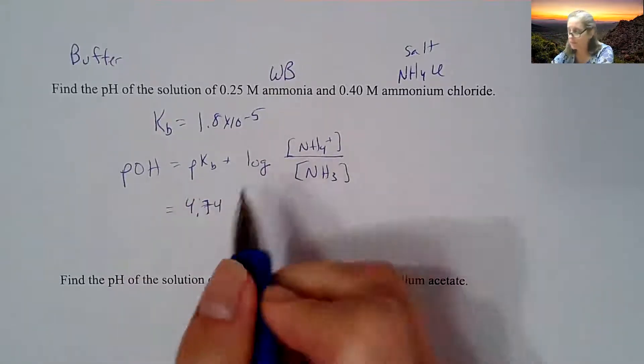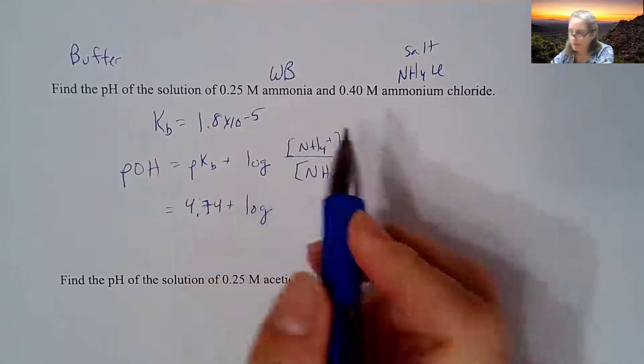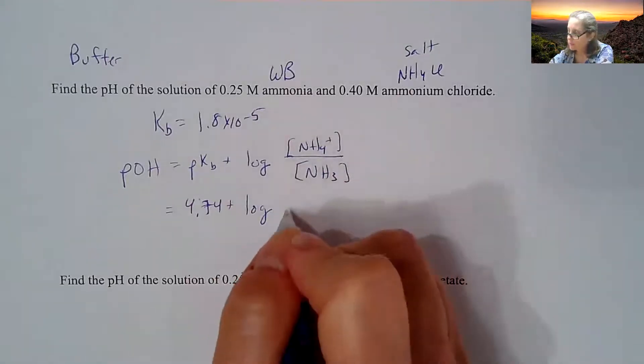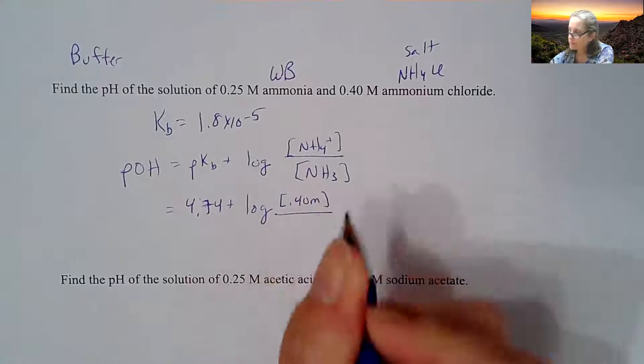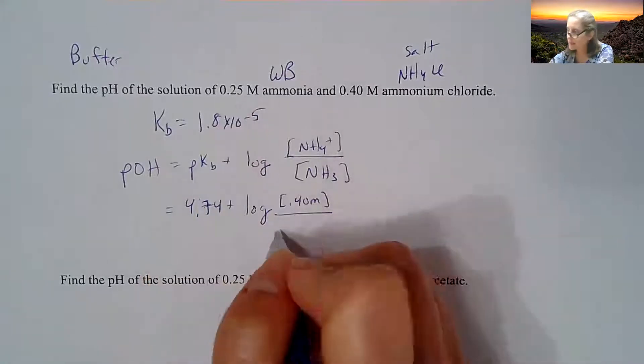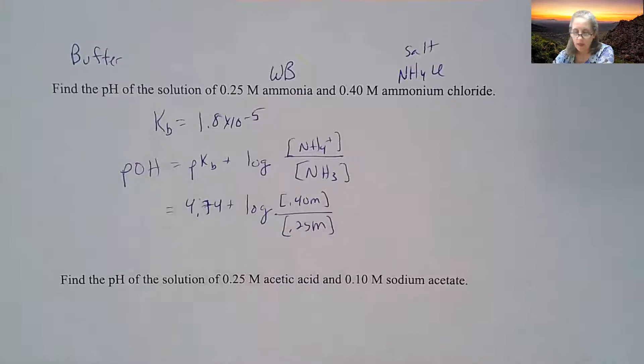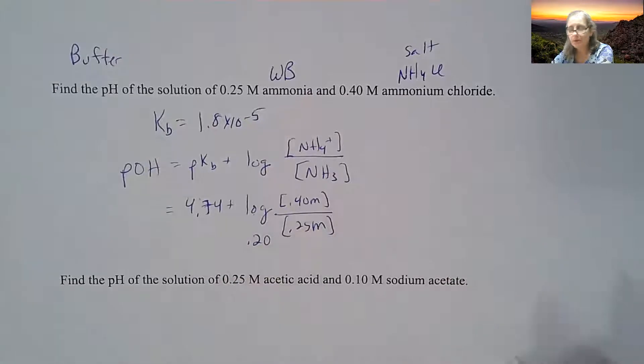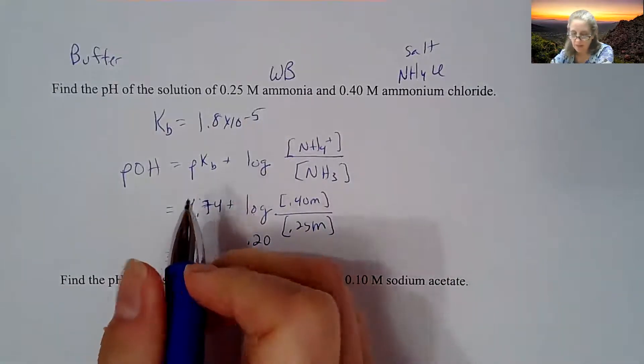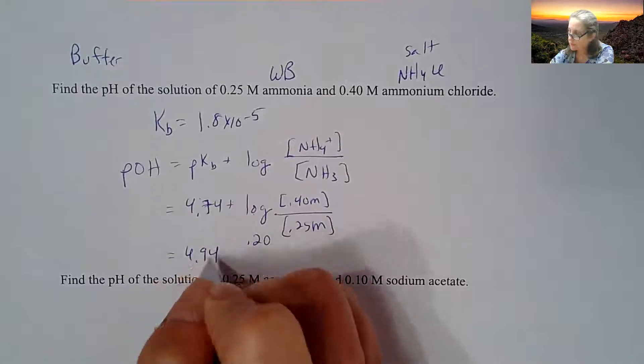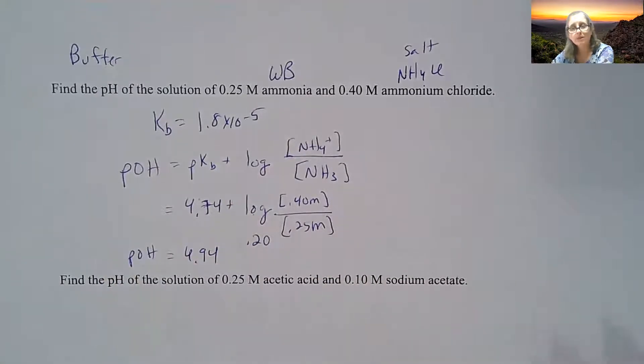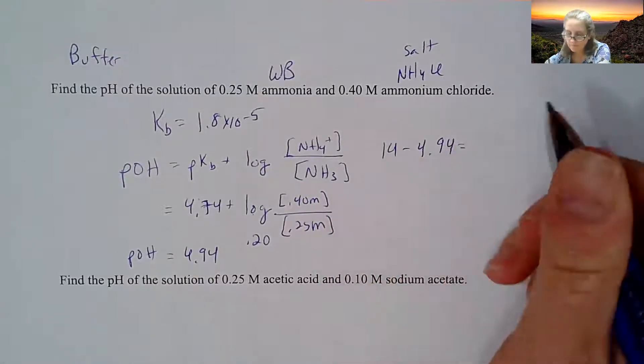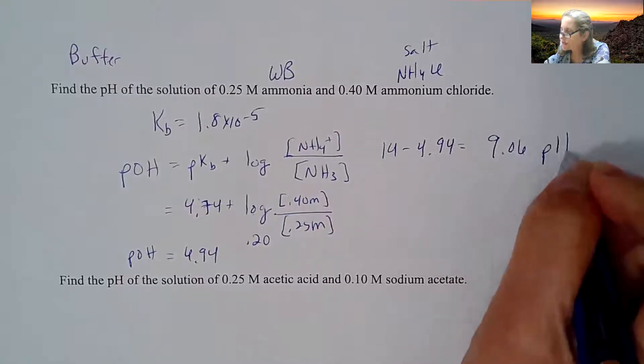You're going to see that number multiple times. The log of, well, what's the concentration of the ammonium chloride? That happens to be 0.4, so that's going to go on top. And what's the concentration of the base? That is 0.25 molar. And then divide those two numbers and take the log of it. It comes out to be about 0.20. So your final answer is about 4.94 is your POH. But, of course, that's not your pH. So you subtract that from 14, and you're left with 9.06 as your pH.